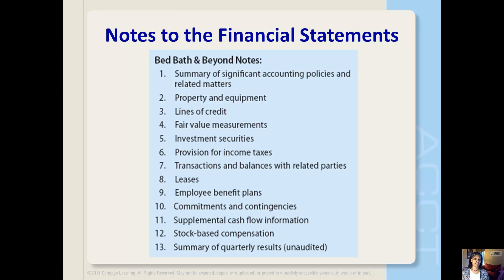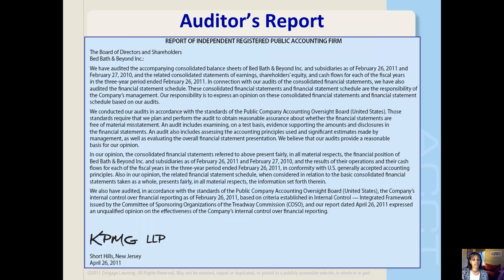Here's an example of a list of the notes to the financial statements — again, this is Bed Bath & Beyond. The notes to the financial statements are the textual and numerical information immediately following the financial statements. These notes do three things: they disclose the accounting methods used to prepare the financial statements, they disclose additional detail and explanation of account balances, and they provide information not recognized in the financial statements. This slide shows a listing of all the footnotes that appear in Bed Bath & Beyond's financial report.